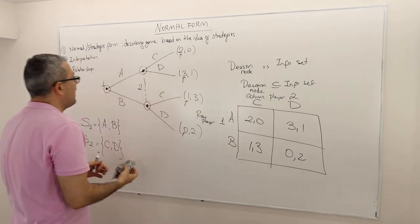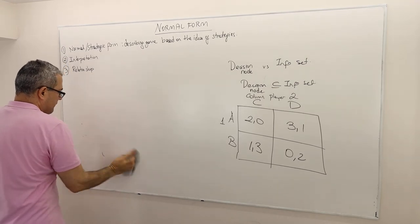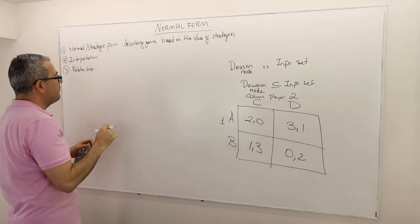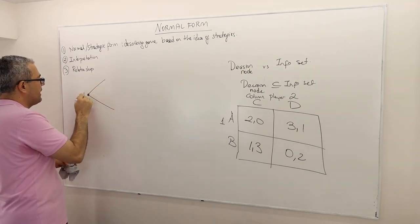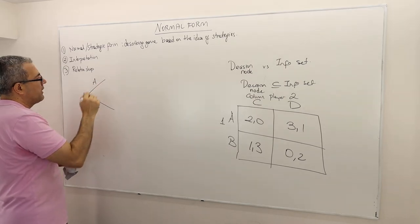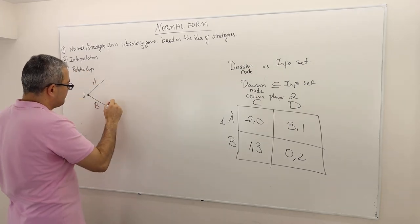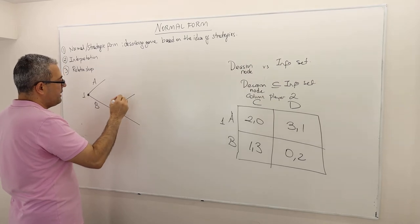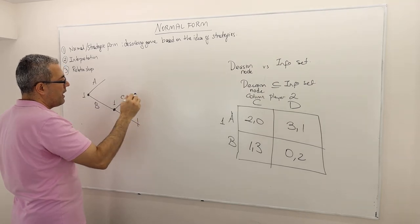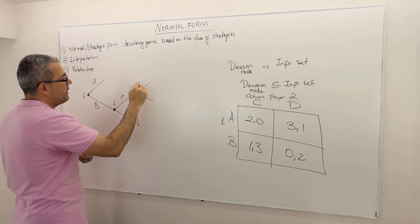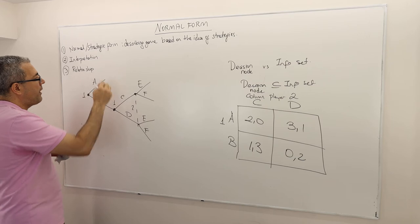Let's work with another example. As I change the game structure, the strategy space will also be different. Suppose player one moves first with actions A and B, then player one moves again with actions C and D, and then player two moves with actions E and F, E and F. The payoffs are 2, 2, 0, 0, 1, 1, 2, 5, 5, 2.